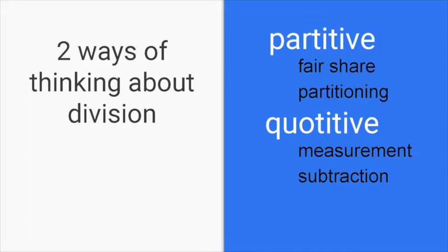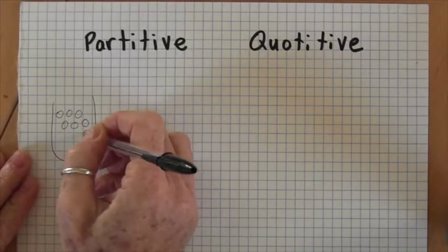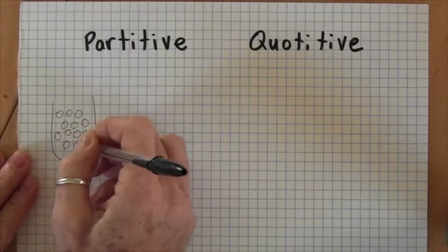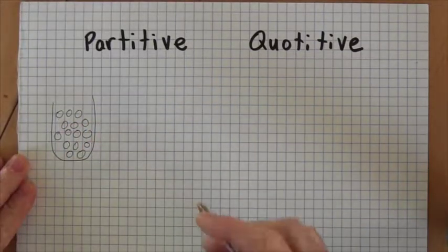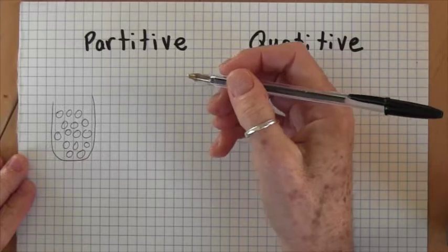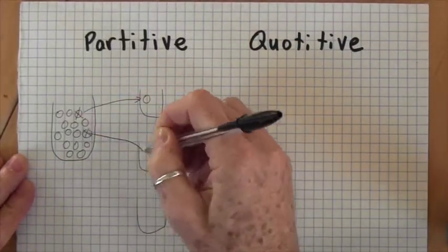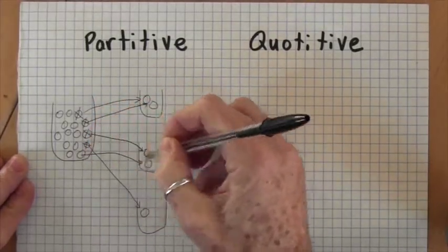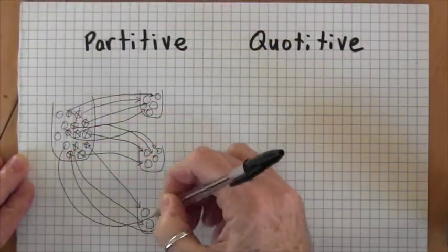To show you what each type means, I'll give you an example. Suppose you have 15 cookies in a bag. You want to share those cookies with three people, so you're going to get three little bags and put the cookies in so they are fairly shared between those three people.